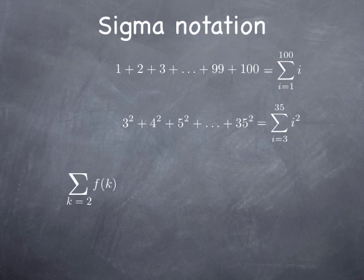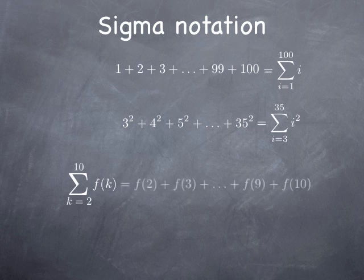So k equal 2 means I'm going to start with k equal 2. At the top, I have the last value and k takes all the integer values between 2 and 10. In other words, that means I'm going to plug k equal 2, the first value, so I obtain f of 2. Then I add the next term when k is 3, that's f of 3. Then the next term when k is 4, f of 4, and so on, until I plug the last value which is 10.